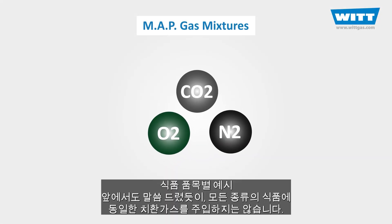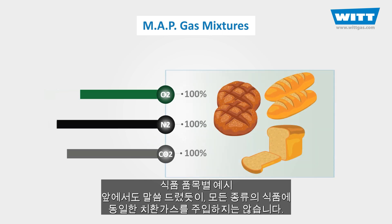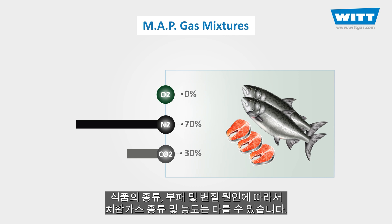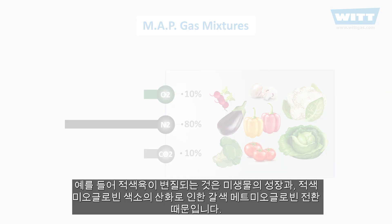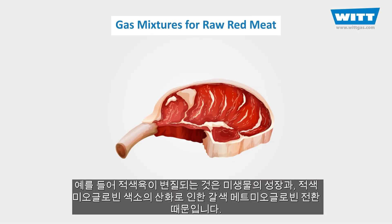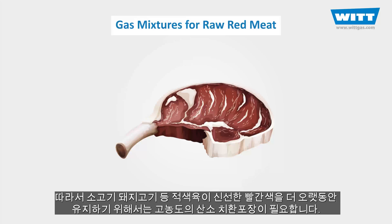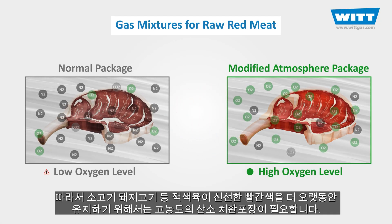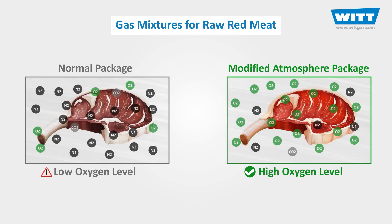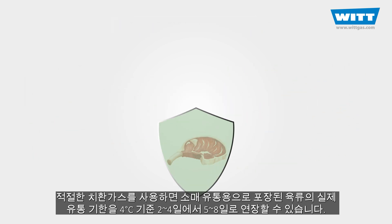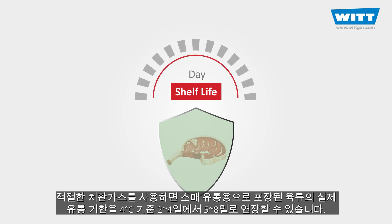We don't mix these gases in the same way for all kinds of foods. Depending on the type of food product and the specific causes of spoilage or quality deterioration, the gas mixture will be different. For example, mechanisms that limit the shelf life of raw red meats include microbial growth and oxidation of the red myoglobin pigment, converting it to oxidized brown metmyoglobin. For this reason, high concentrations of oxygen are necessary to maintain the desirable red colour for a longer period of time. With the right mixtures, the practical shelf life of consumer-packed meat can be extended from two to four days to five to eight days at 4°C.